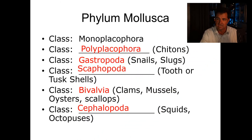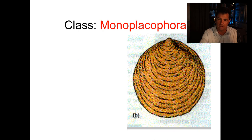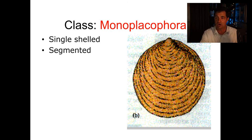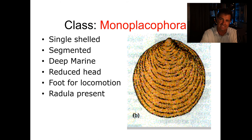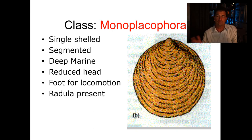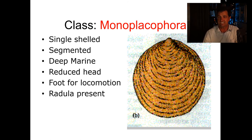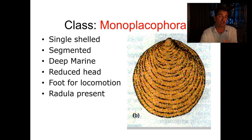There are several mollusca classes: Monoplacophora, Polyplacophora, Gastropoda, Scaphopoda, Bivalvia, and Cephalopoda. The Monoplacophora are single-shelled, have a segmented body — which is unusual in mollusca — are deep marine organisms with a reduced head, use their foot for locomotion, and have a radula. Until fairly recently we thought they were all extinct; it was only in the 1950s or 1960s that living monoplacophorans were found. This is probably the closest-looking organism to the HAM.